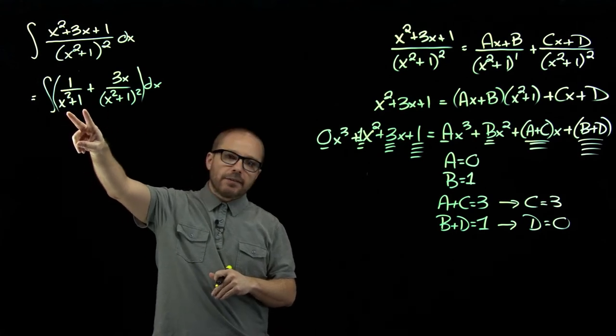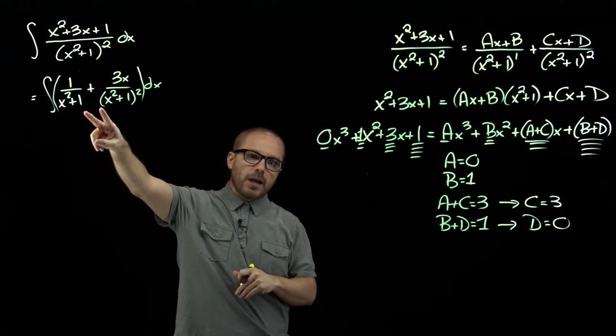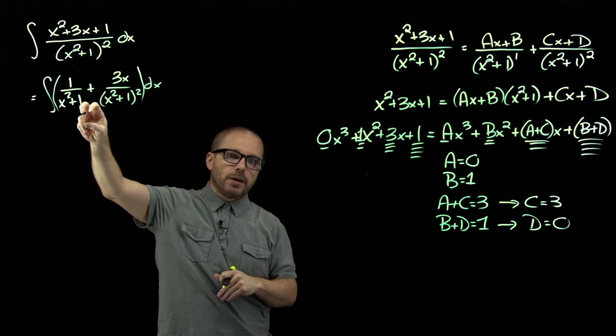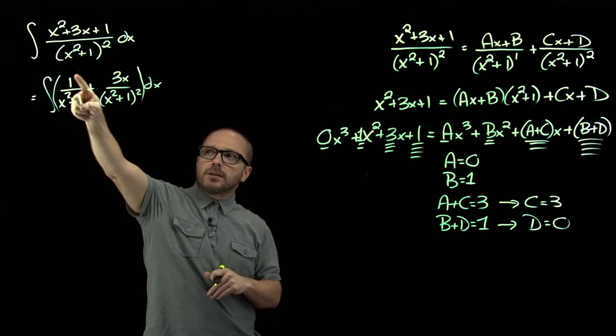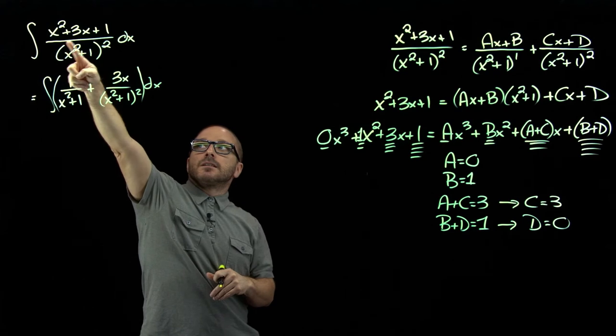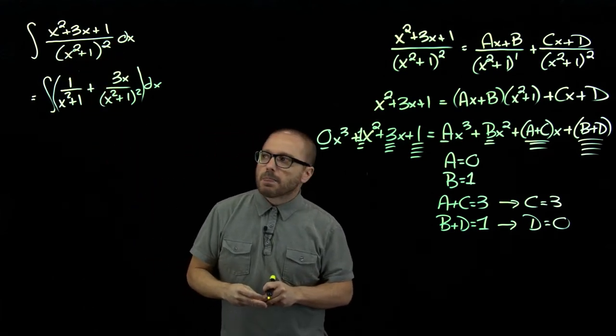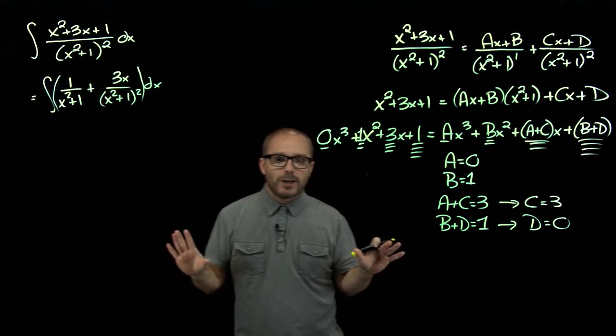So, let's just double check. To get a common denominator, I'd have to multiply that first expression by x squared plus one on top and bottom. Well, then I'd have x squared plus one plus three x, which is exactly what I have up top. So we did do that right, no mistakes.